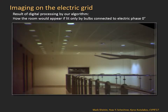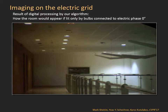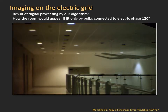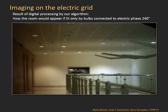By processing the sequence captured using our system, we can reveal hidden information about the scene and show the scene in a new and different light. Specifically, the scene can be shown as composed of distinct illumination components. Here we show a digital rendering of the hallway as if only bulbs connected to AC phase 0 degrees were active, and here as if illuminated only by bulbs connected to phase 120 degrees, and the same for phase 240.